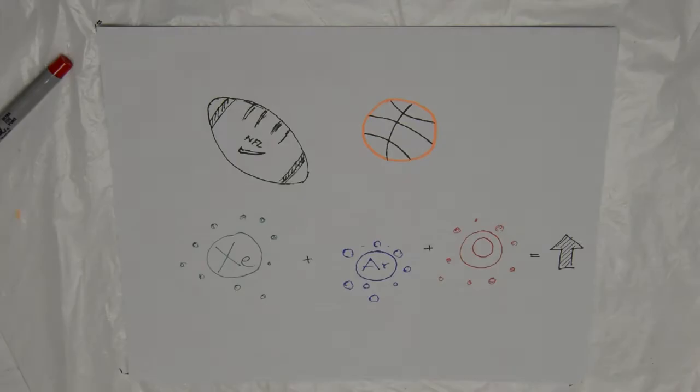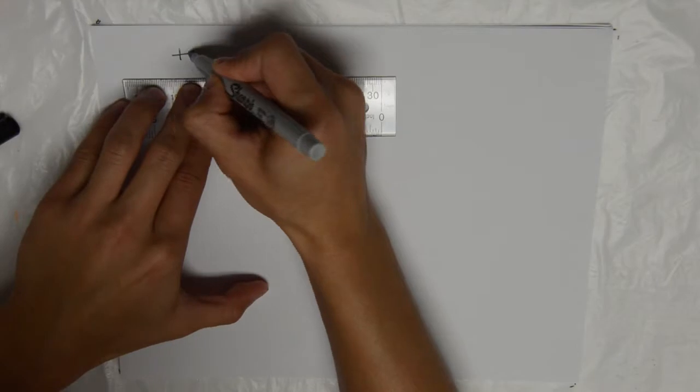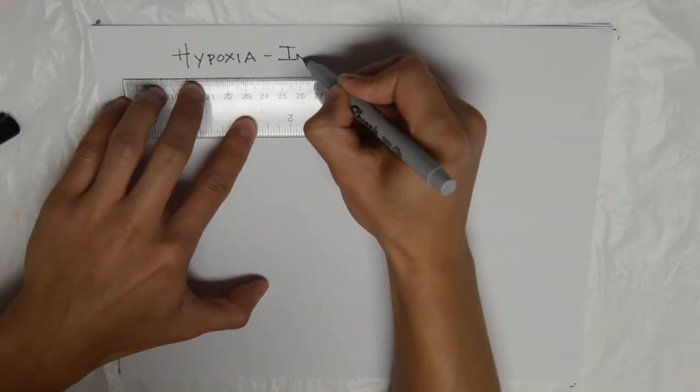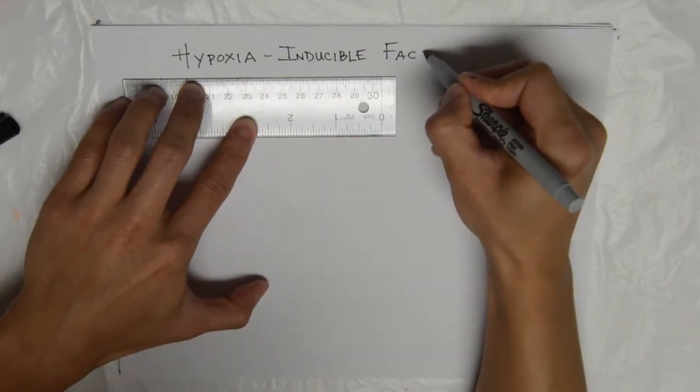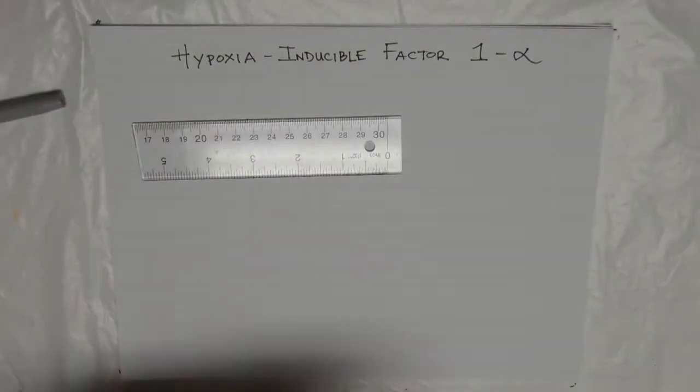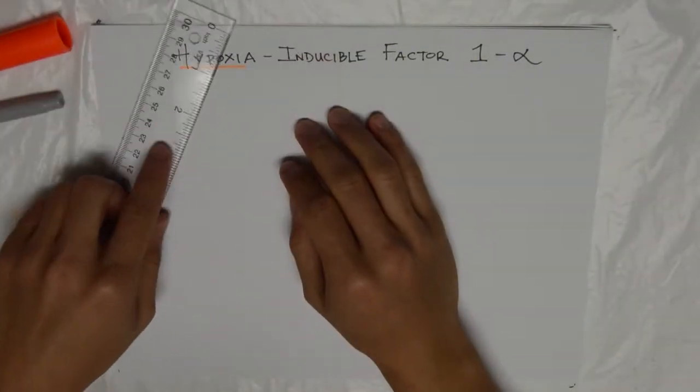So what key factor is affected by xenon and argon? The factor affected by xenon and argon is a protein known as hypoxia inducible factor 1-alpha, in short, HIF-1-alpha.